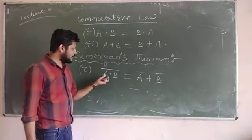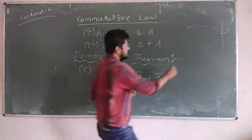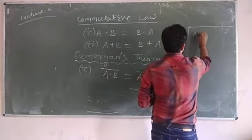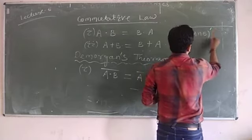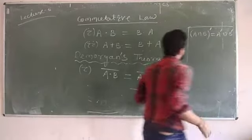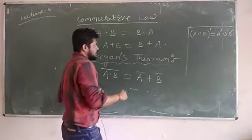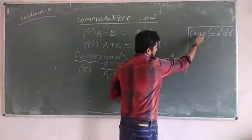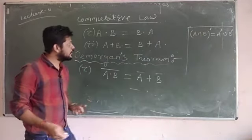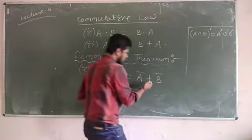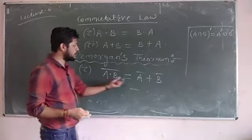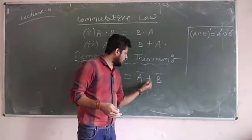You have already studied this in mathematics in set theory: (A intersection B) complement equals A complement union B complement. Here, intersection means AND operation (denoted by dot), and union in Boolean algebra means OR operation. So, (A AND B) complement is always equal to A bar OR B bar.